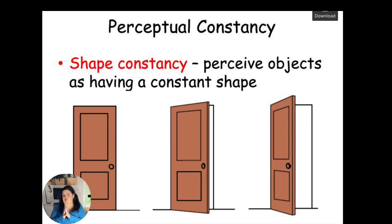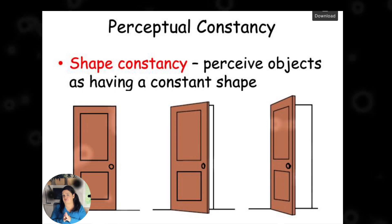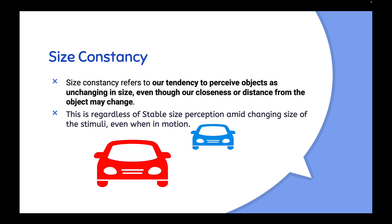There are a couple of different types of perceptual constancy, including shape and size. Size constancy refers to our tendency to perceive objects as unchanging in size, even though our closeness or distance from the object may change — regardless of the stability of sized perception amid the changing size of the stimuli, even if we're in motion on a boat, train, moving car, or walking. With this image of depth perception, even though these cars look like they are drawn right next to each other, the blue one looks like it's further away from us, even though we know it was drawn onto the page right next to the red car.